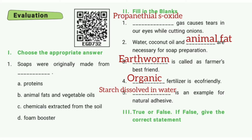Fill in the blanks. First one: A certain compound causes tears in our eyes while cutting onions. The answer is propanethial.